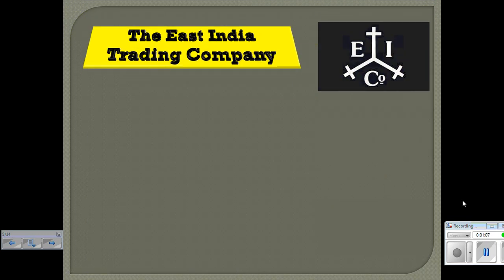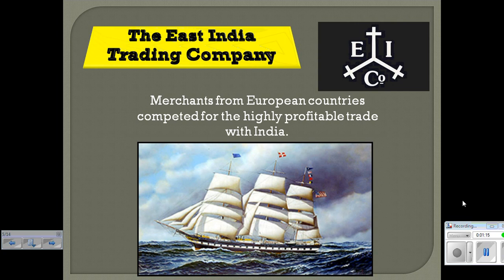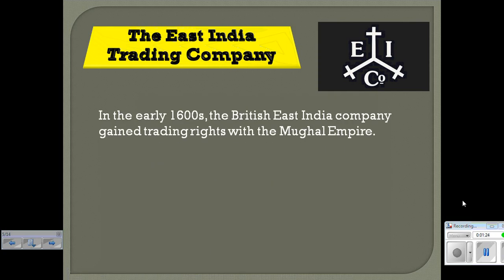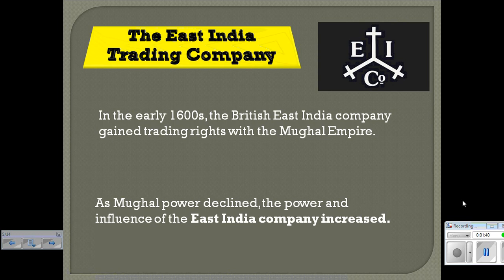So what happens? Well, there's this company called the East India Trading Company. They are a British company, and essentially they are merchants from European countries who compete for the highly profitable trade within India. In the early 1600s the British East India Company starts to gain specific trading rights with this empire, which means that no one else is allowed to trade with them. And that always helps out the European nations, not the locals. As Mughal power declines, the power and influence of the East India Trading Company increases. This is not a government entity — this is an economic corporation that is slowly taking over control.